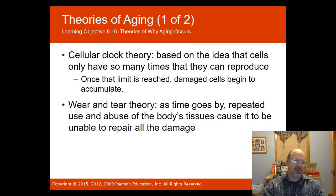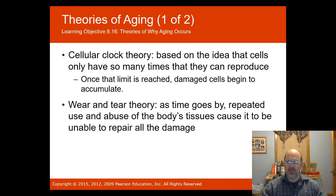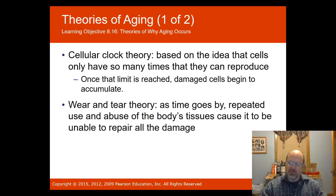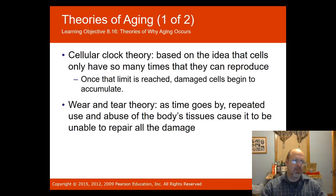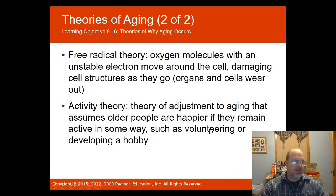Different theories explain aging. The cellular clock theory states that cells can only reproduce and repair themselves for so long — Hayflick in 1977 said cells are limited in the number of times they can reproduce. Martin and Buckwalter in 2001 showed the existence of telomeres — structures on the ends of chromosomes that shorten each time a cell reproduces. The wear-and-tear theory says repeated use and abuse of body tissues causes them to be unable to repair all damage. The free radical theory proposes that oxygen molecules with an unstable electron move around cells, damaging cell structures through oxidation.